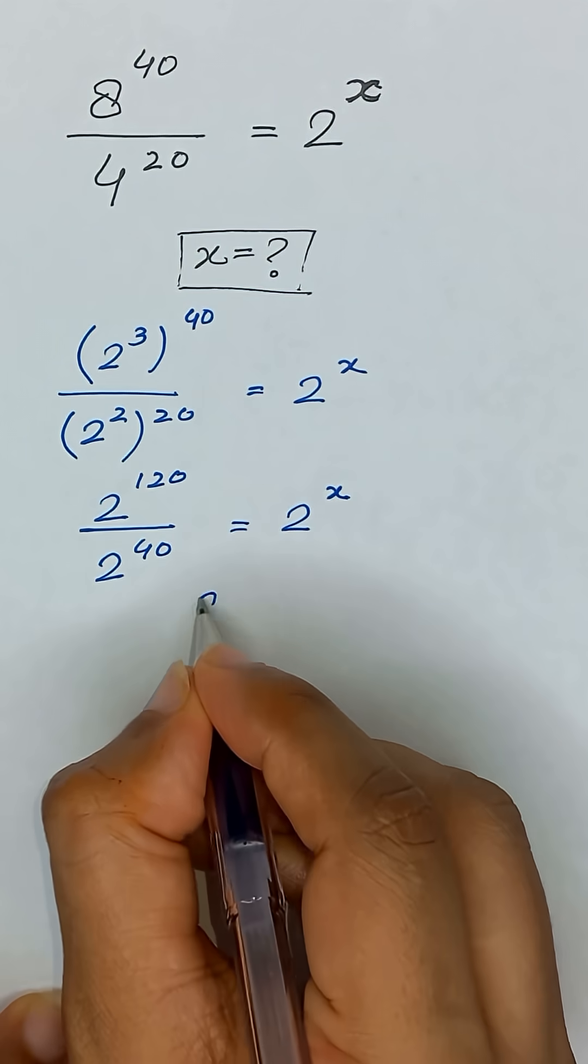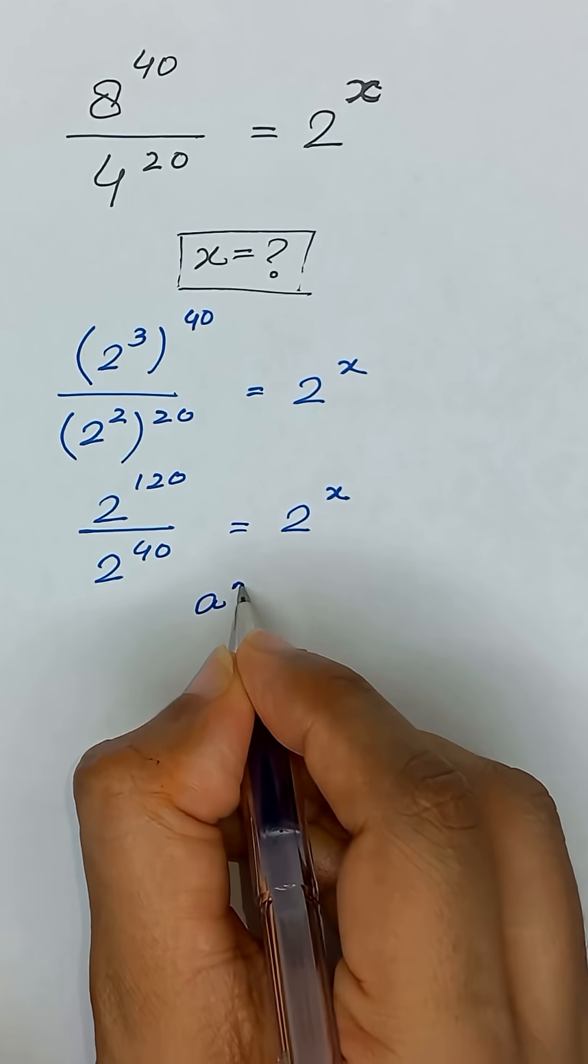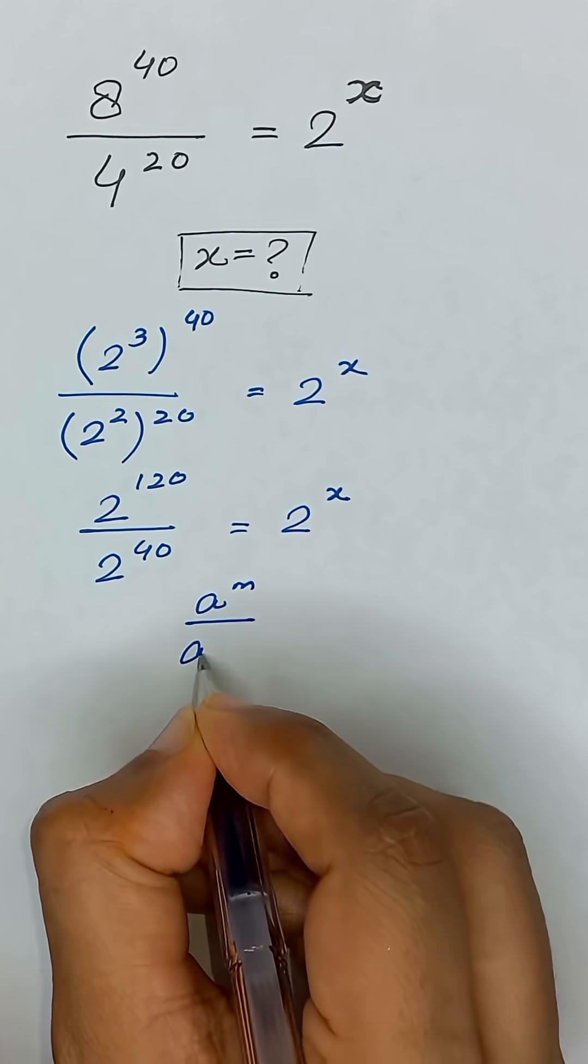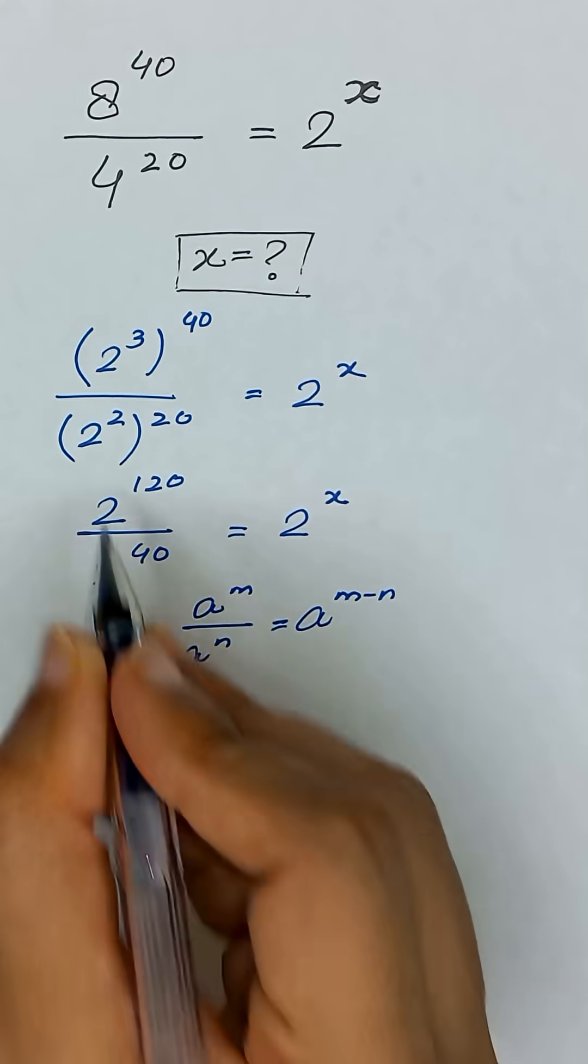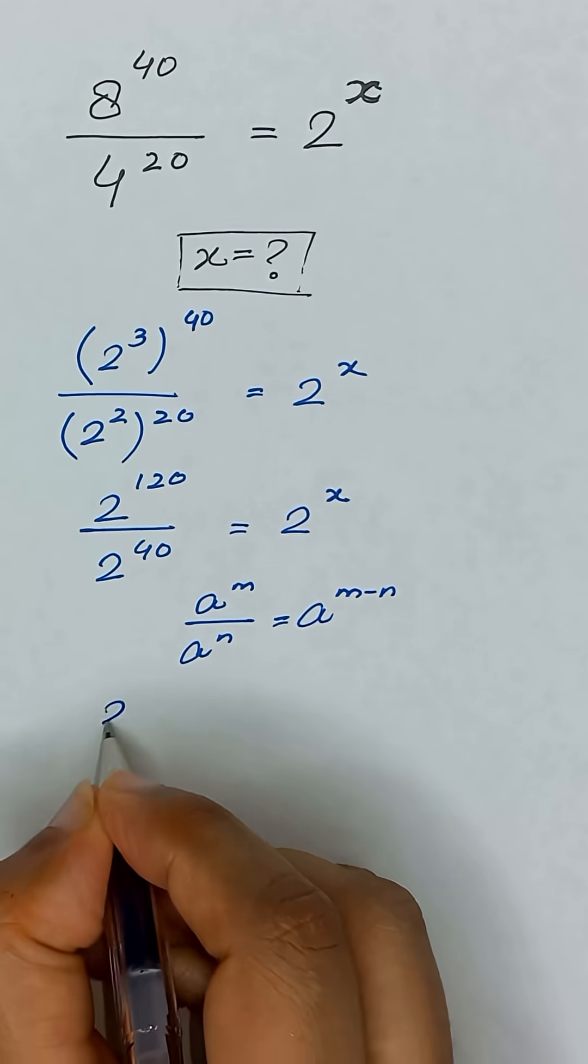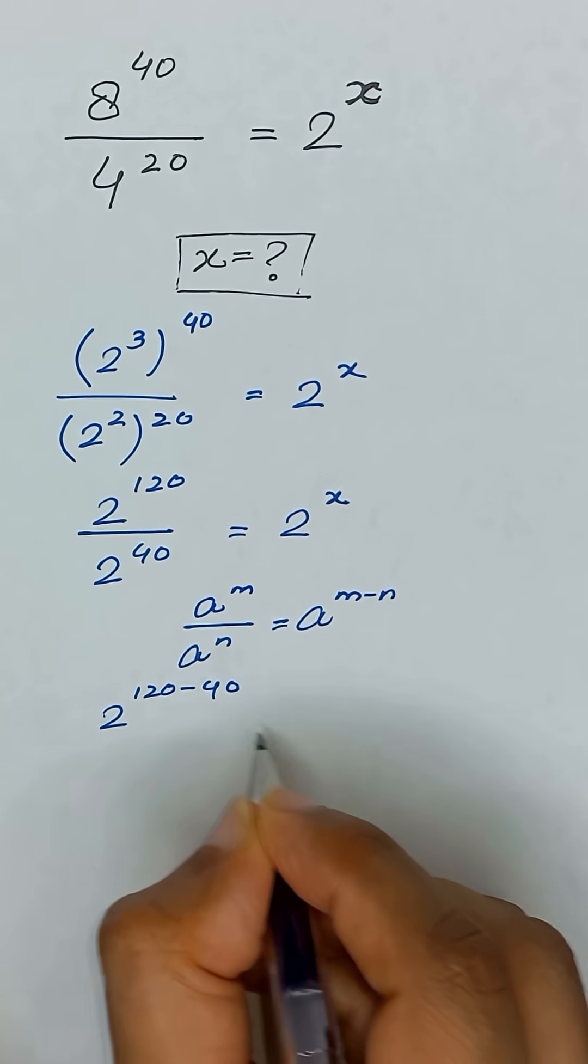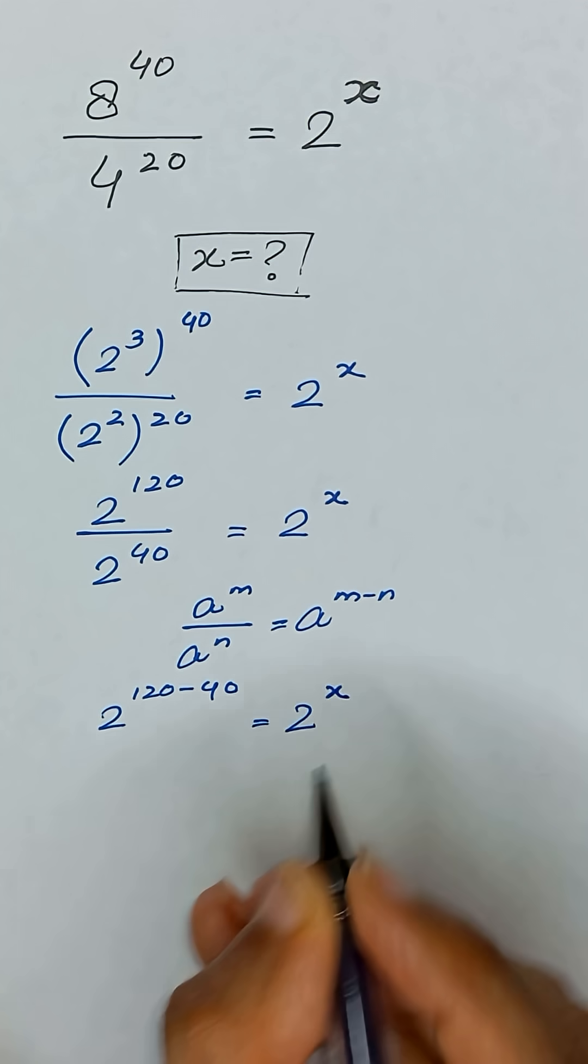Now we will use again this exponential rule, which is a to the power m divided by a to the power n is equal to a to the power m minus n. So it will become 2 to the power 120 minus 40, is equal to 2 to the power x.